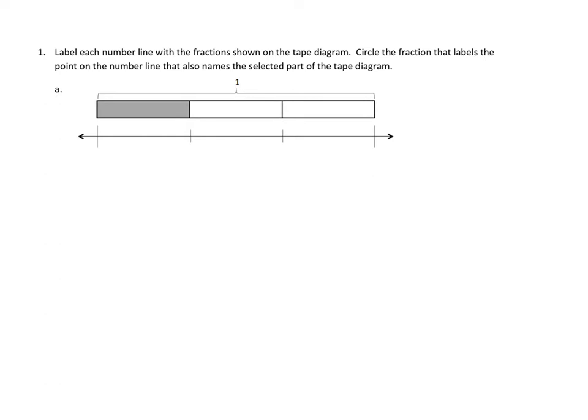Let's take a look at what we've got here. It looks to me like we've got a whole — that's very clearly labeled. This whole thing is a whole. How many parts is it divided into? It looks like one, two, three parts. So it looks like we're working in thirds. Then how many thirds, going left to right, have we shaded in if we only got up to this point? Well, that would be zero thirds. So I'm going to label this zero thirds.